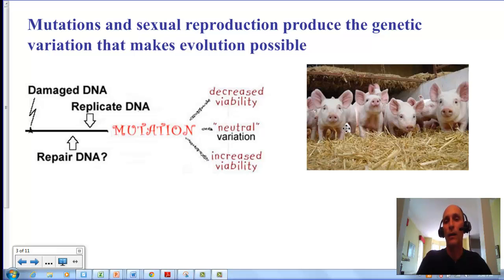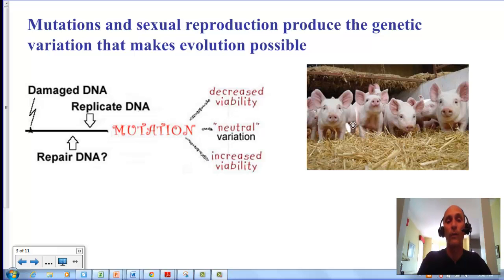The other way we're going to get variation is through sexual reproduction. Any organisms that reproduce sexually, like these little piglets, will create variation — slight differences between individuals. They all look pretty similar, but if you looked at something as simple as ear size, the length of whiskers, or the length of their forelimbs or hind limbs, you would see variation. And that variation is what natural selection is going to work on — selecting for variants that are best fit.